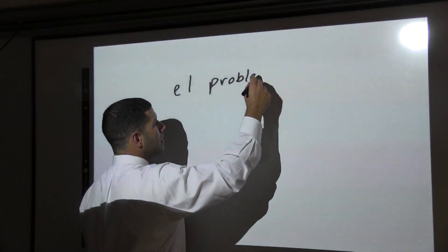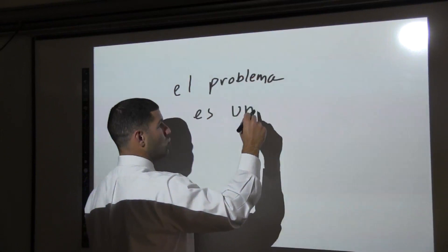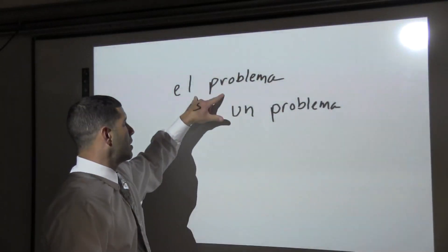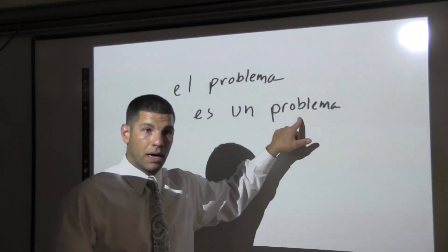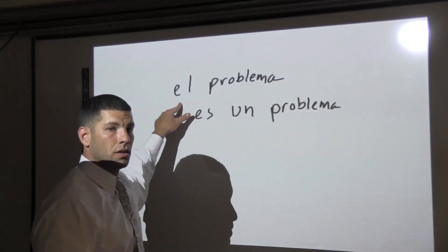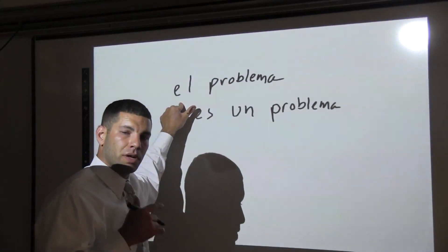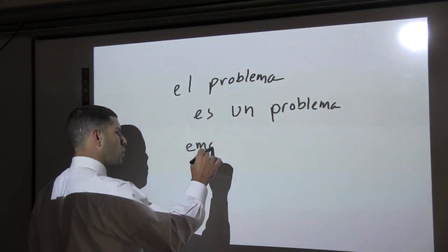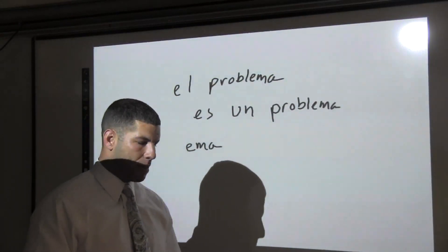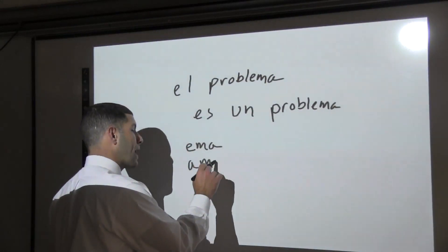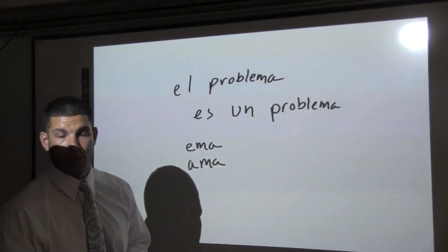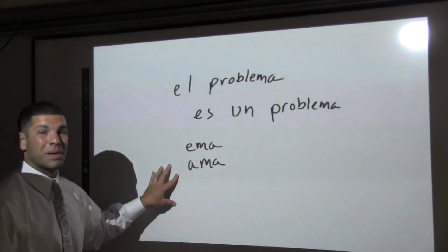Another kind of noun: el problema — 'the problem is un problema.' It ends in -a, and it's masculine. That's a very common problem for people learning Spanish as a second language, because their general inclination is to put la in front of a noun ending in -a. Lots of nouns ending in -ema are masculine: el sistema, el tema, el problema. And nouns ending in -ama too: el programa. For the most part, -ema and -ama are going to be masculine — it's a weird one.